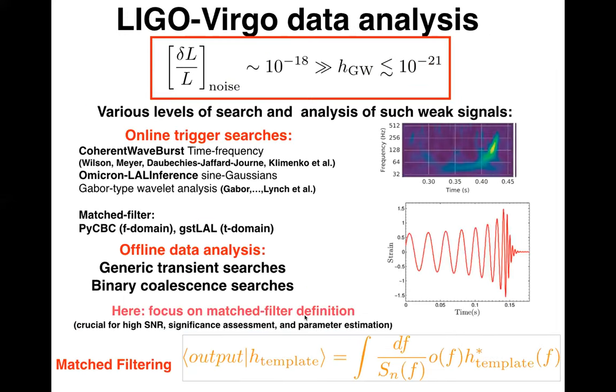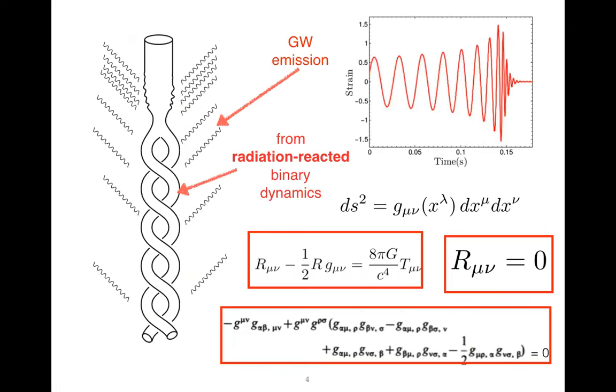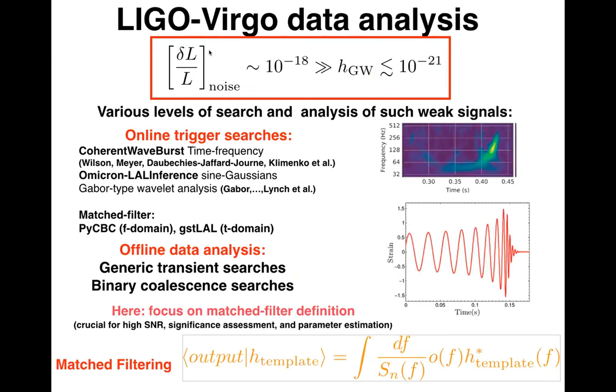Let me remind you of what is really needed for LIGO-VIRGO data analysis. The basic point is the broadband noise effect on the fractional variation of the length of the arms of the interferometers. The four kilometer arms of the LIGO and VIRGO interferometers have broadband noise creating fluctuations at the level of 10^-18, while gravitational wave signals are always below 10^-21. So the gravitational wave signal you are looking for is three orders of magnitude below the broadband noise.